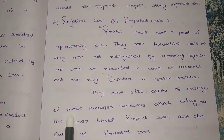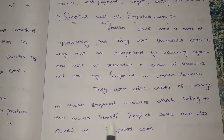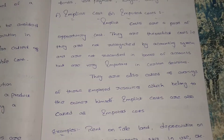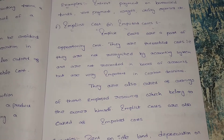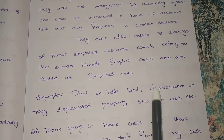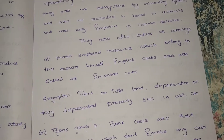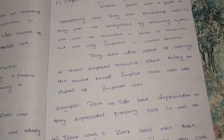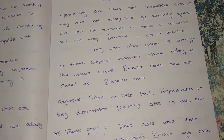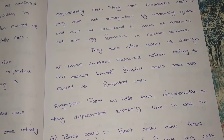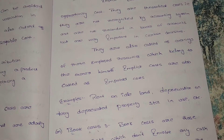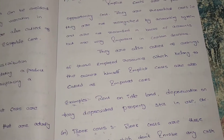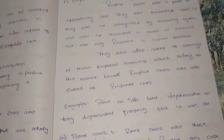Implicit costs are also called as earnings of those employed resources which belong to the owner himself. Examples: rent on idle land — if there is idle land but we are not receiving any rent from it, that comes under implicit cost. And depreciation on fully depreciated property still in use — suppose a property's useful life is 10 years, already 10 years have gone and the machinery should be fully depreciated, but still we are using it. These types of costs are implicit costs.